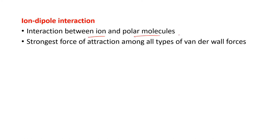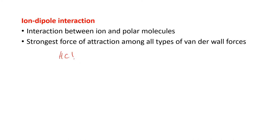Now let us discuss ion-dipole interactions. These are interactions formed between ions and polar molecules, and they are the strongest force of attraction among all types of van der Waals forces. Taking the example of HCl: in HCl, hydrogen and chlorine are present. Chlorine is electronegative, so it pulls electrons towards itself. As a result, there is generation of partial positive charge on hydrogen and partial negative charge on chlorine.